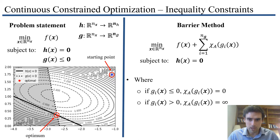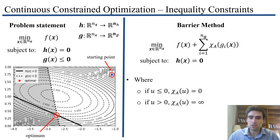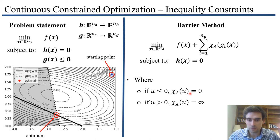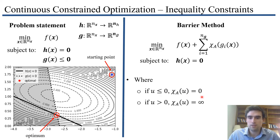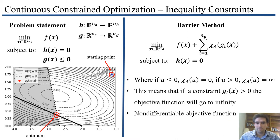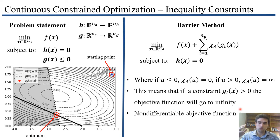To simplify notation, I define xi of u: if u is less than or equal to zero, it returns zero; if u is greater than zero, it returns infinity. If a constraint is greater than zero, the objective function goes to infinity, and because we're minimizing, we'll avoid this at all costs. However, this function is not differentiable, and we also don't know how close we are to feasibility — which is sometimes important.